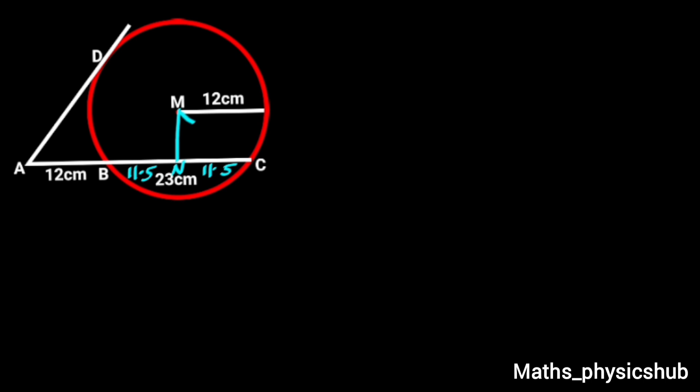Next we draw a straight line from M to C, and this line is the same as the radius of the circle which is 12 cm. Since triangle MNC is a right angle triangle, we can use the Pythagorean theorem to find the length of line MN, which is the distance from line BC to M.